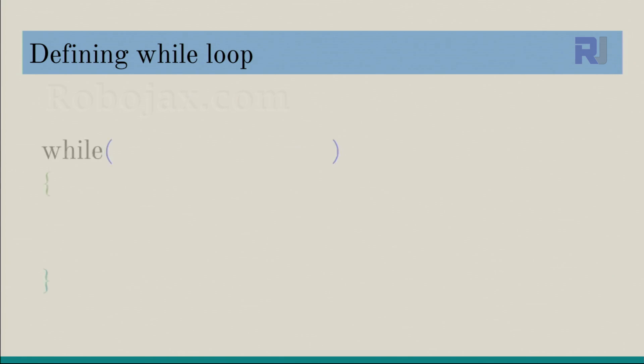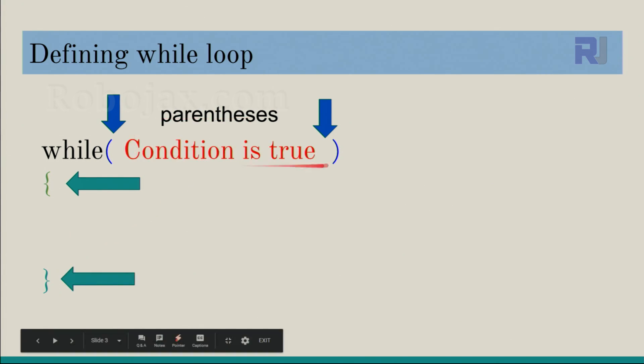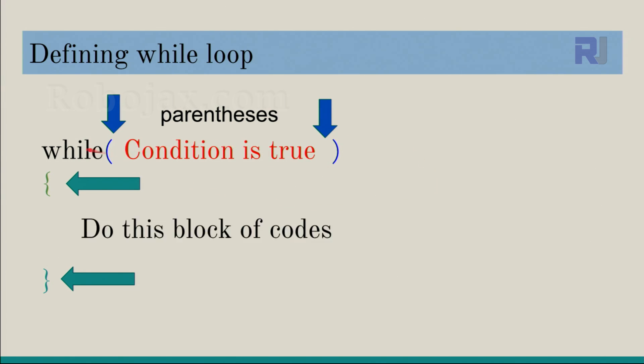Let's see how we can define a while loop. A while loop starts with the word while with a lowercase W, then we have open and close parentheses. The other important part is the curly braces, opening and closing. The condition goes between the parentheses. In English, it means while this condition is true, do these codes, whatever is between the opening and closing braces.